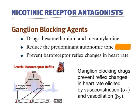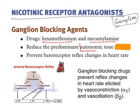The next topic is nicotinic receptor antagonists. Nicotinic receptors are present on the ganglion as well as skeletal muscle. Ganglionic blockers include hexamethonium and mecamylamine. Their predominant effect is reducing autonomic tone. In the autonomic nervous system two-neuron system, one neuron is the preganglionic neuron; at the ganglion, nicotinic receptors are present. Another neuron starts from there. Both sympathetic and parasympathetic systems have ganglionic nicotinic receptors, and blocking them completely reduces autonomic tone.